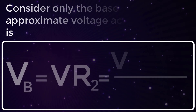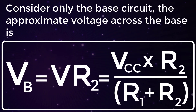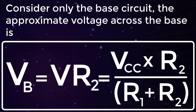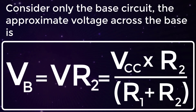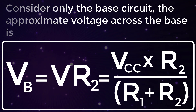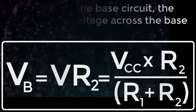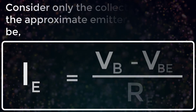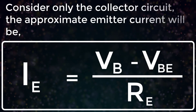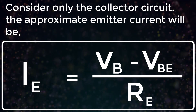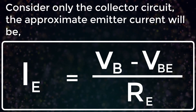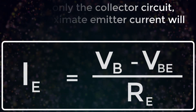Consider only the basic circuit. The approximate voltage across the base is Vb = Vr2 = Vcc × R2 / (R1 + R2). Consider only the collector circuit. The approximate emitter current would be Ie = (Vb − Vbe) / Re.